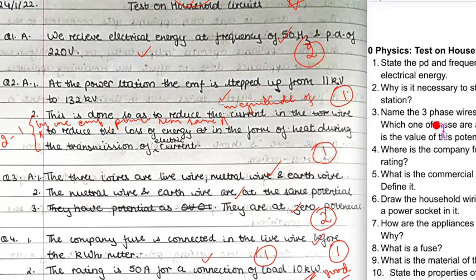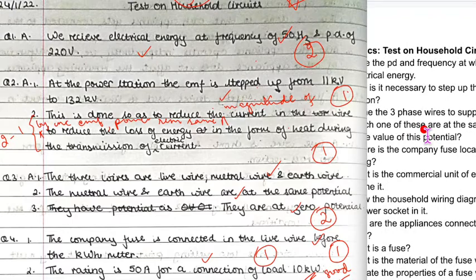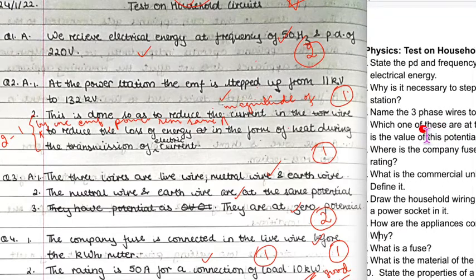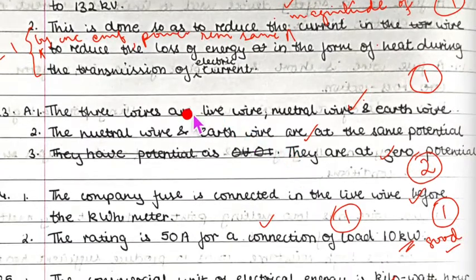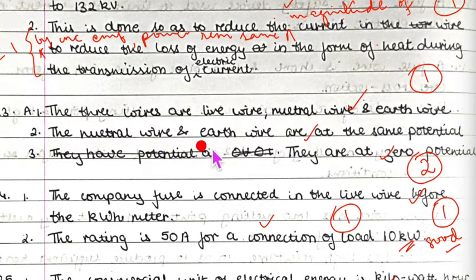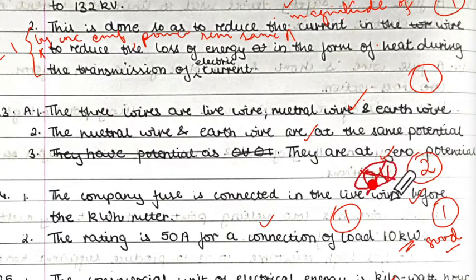Question three: Name the three phase wires that supply electrical energy. Which of these are at the same potential and what is the value of this potential? The three wires are the live wire, neutral wire, and earth wire. Neutral and earth are at the same potential and the value is zero potential. Please write 'zero potential' spelled out properly rather than using symbols.